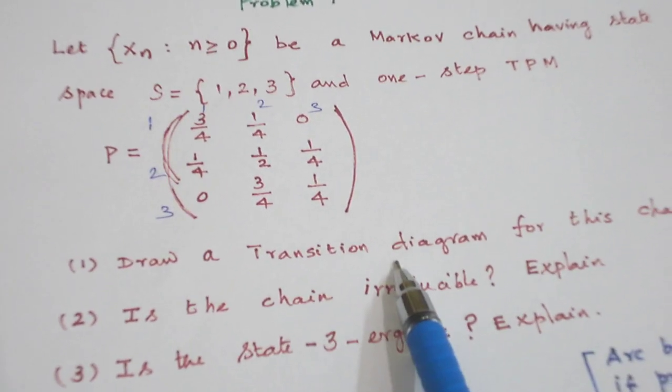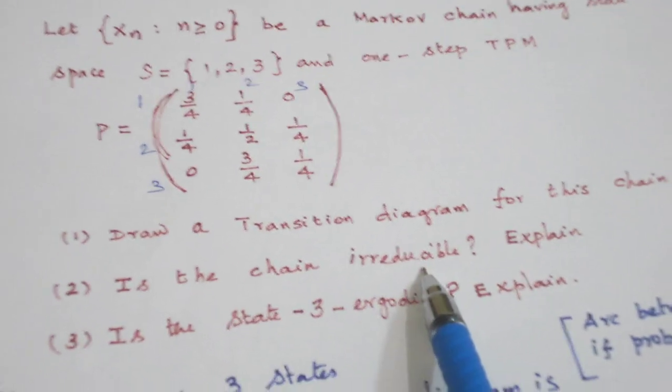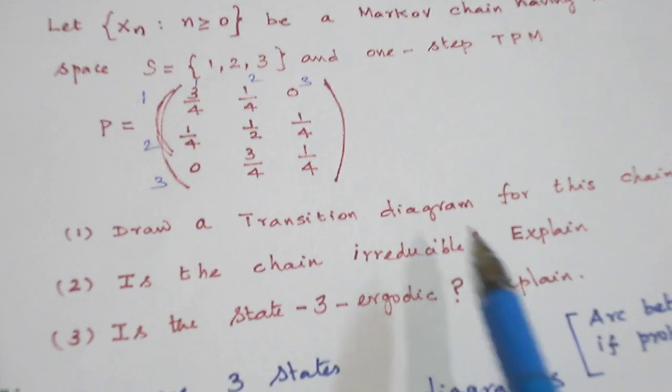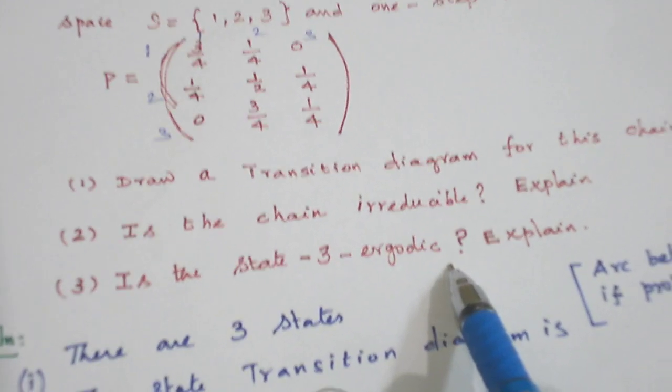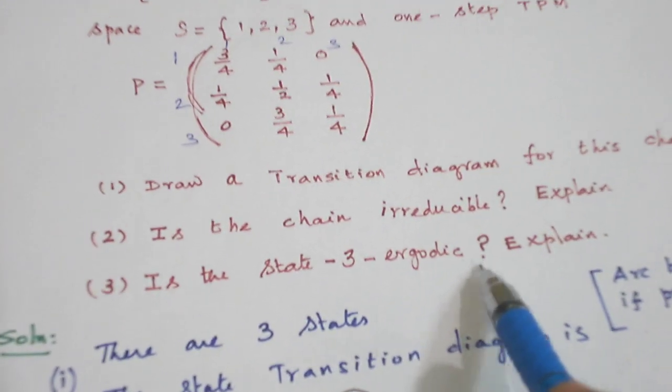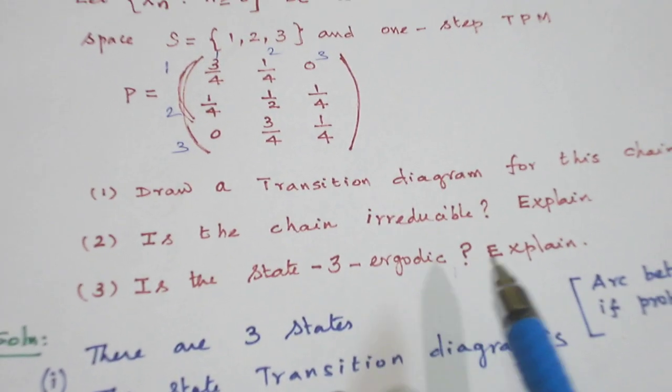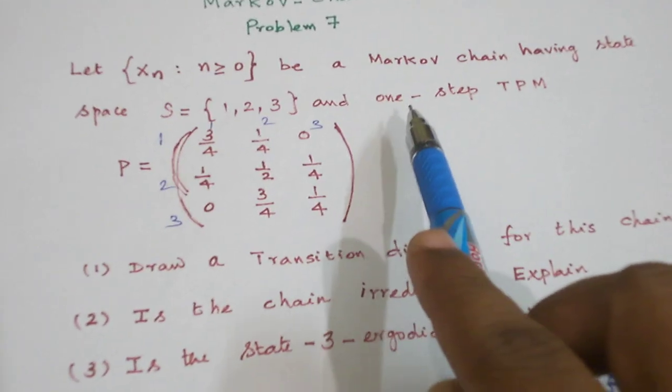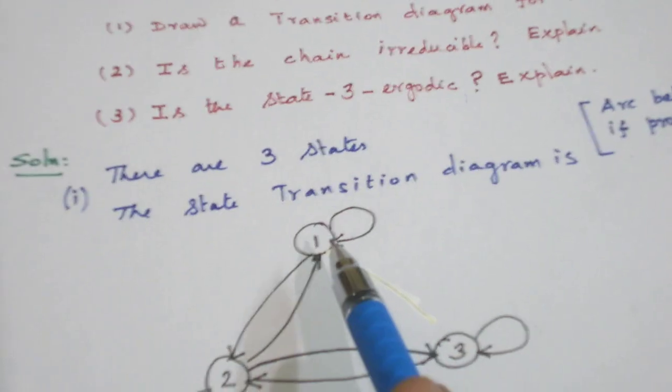We are asked to draw the transition diagram. Then we are asked to check whether the chain is irreducible and specifically state 3, is it ergodic or not. First of all, the chain has three states so we draw three nodes.